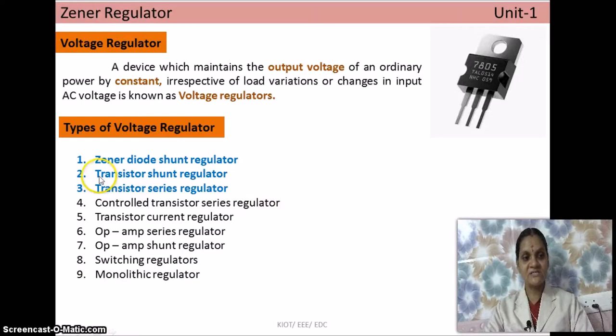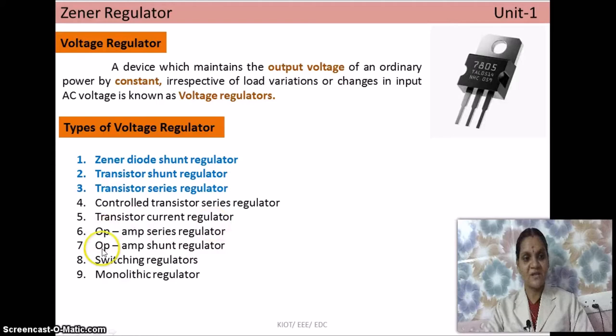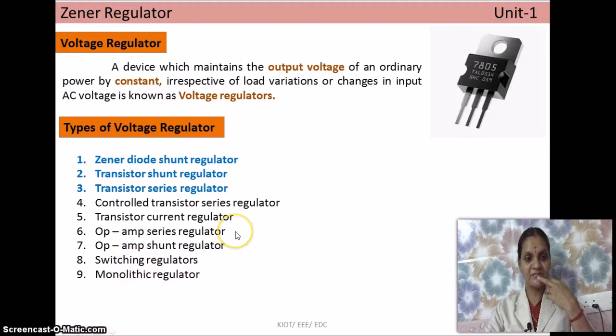In the first type you use a zener diode, while in the second and third types you additionally use a transistor — a new term which will be explained in detail later. In the fourth type, the controlled transistor series regulator, certain parameters at the output can be controlled. The op-amp series and shunt regulators use an operational amplifier, an IC-based device with numerous applications, instead of a transistor.